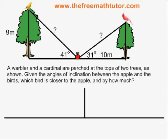This is a multiple-step SOH CAH TOA situation. Both triangles are right triangles, and each can be solved with SOH CAH TOA, but we must do at least two formulas in order to answer the question.